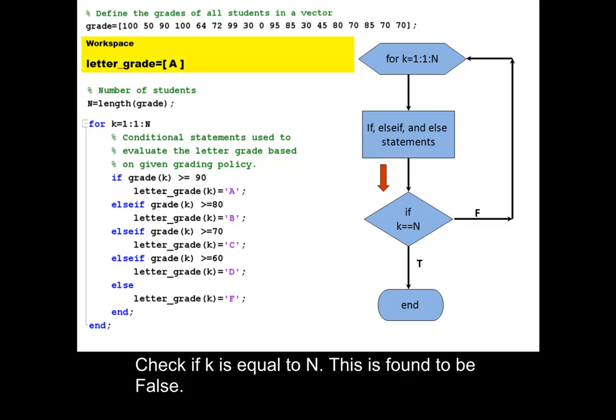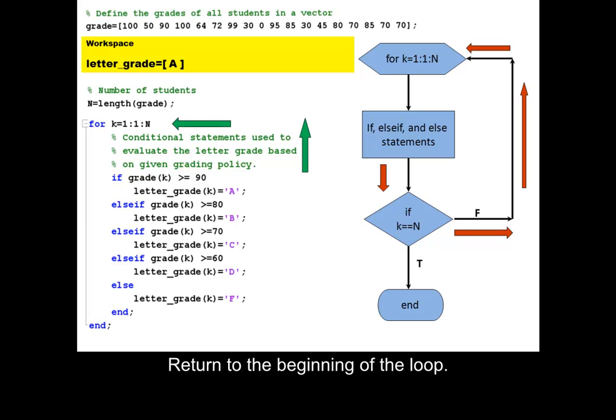Check if k is equal to n. This is found to be false. Return to the beginning of the loop.